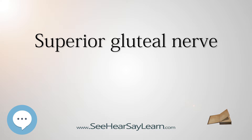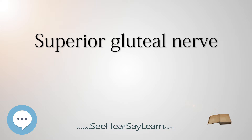In normal gait, the small gluteal muscles on the stance side can stabilize the pelvis in the coronal plane. Weakness or paralysis of these muscles caused by a damaged superior gluteal nerve can result in weak abduction in the affected hip joint. This gait disturbance is known as Trendelenburg gait.